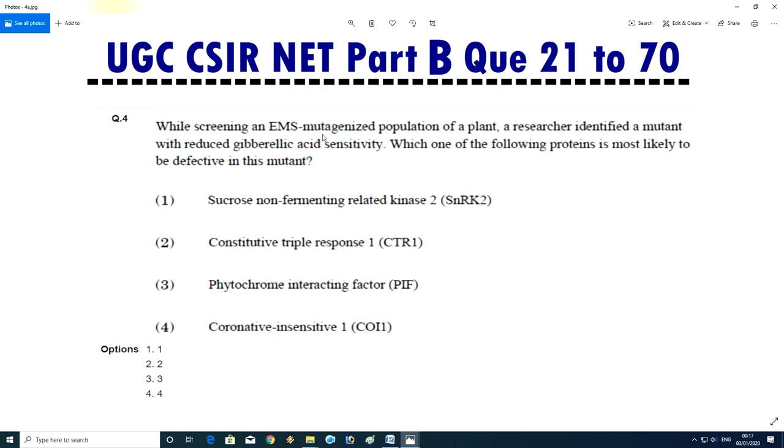Question No.4 - While screening an EMS mutagenized population of a plant, a researcher identified a mutant with reduced gibberellic acid sensitivity. Which one of the following protein is most likely to be defective in the mutant? Sucrose non-fermenting related kinase 2, constitutive triple response 1, phytochrome interacting factor, or coronative insensitive 1. Answer is third, phytochrome interacting factor.